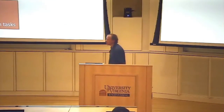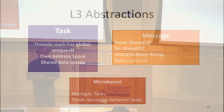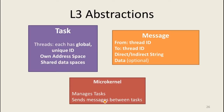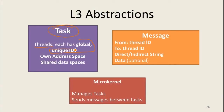If you want to make your microkernel simple and efficient, you want to keep it simple — simple abstractions and nothing you don't really need. The abstractions L3 provides start with a task, similar to a Rust task. A task is a set of threads, and each thread has a globally unique ID, which is the way to identify a particular thread.